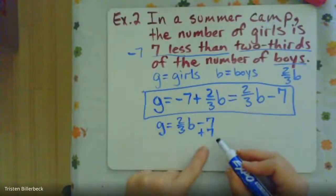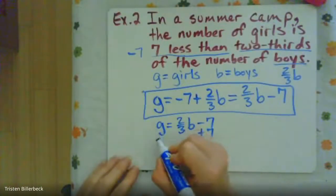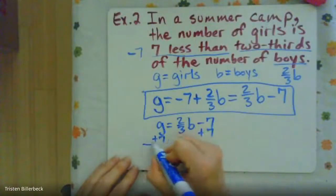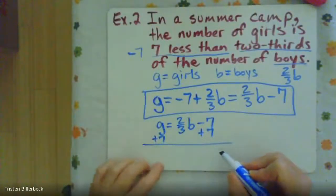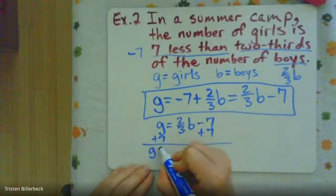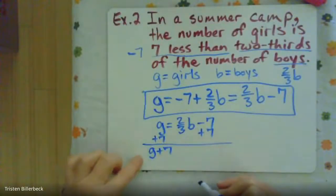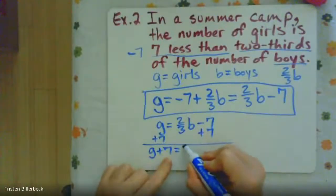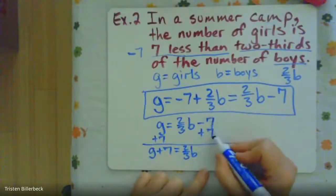So the opposite of a minus seven is a plus seven, and then we add a seven here. These are not like terms, so we can't combine them. So it's G plus seven equals two-thirds boys, and then negative seven plus seven is zero.